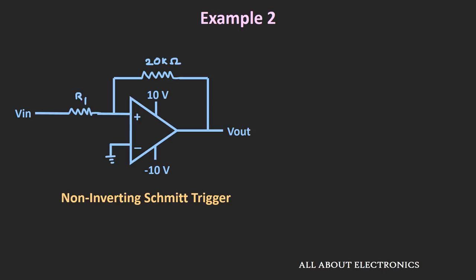The hysteresis width is the difference between the upper and lower threshold voltages. For this non-inverting Schmitt Trigger, the upper threshold voltage is given by −R1/R2 × VL. With VL = −10V, the upper threshold voltage equals 10 × R1/R2.